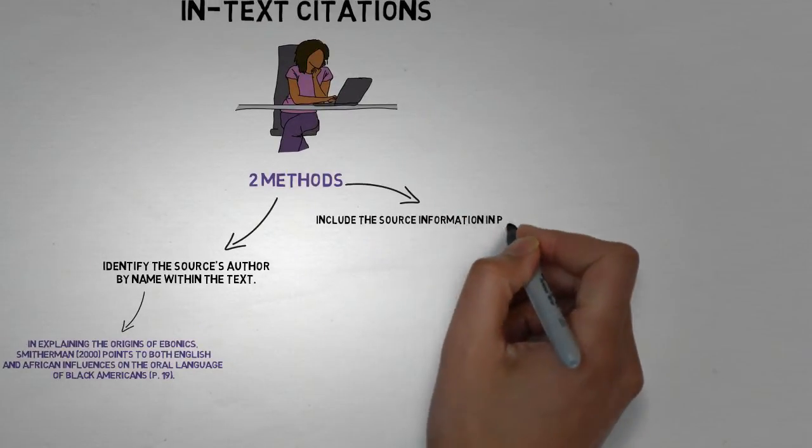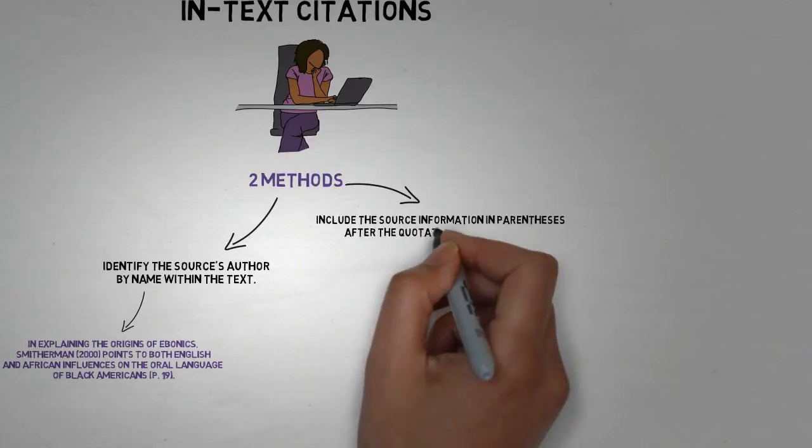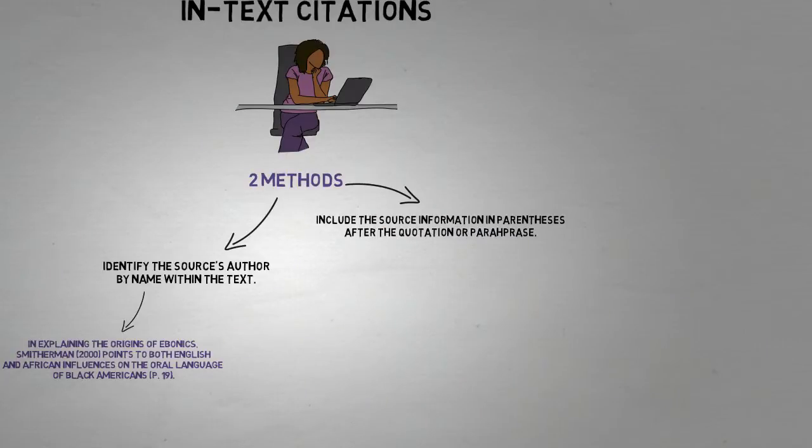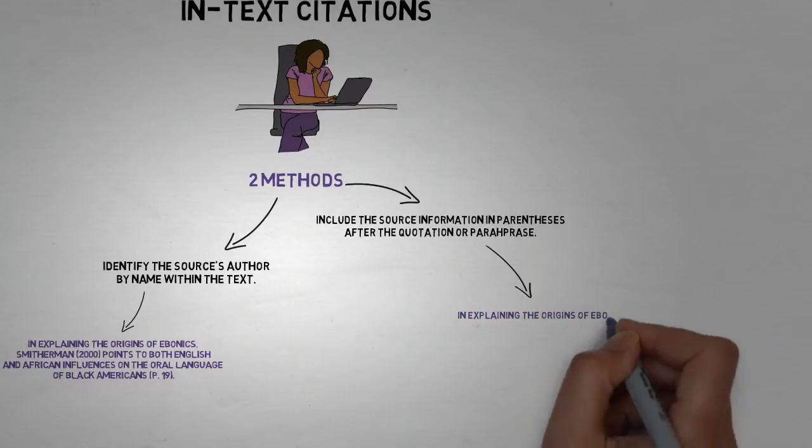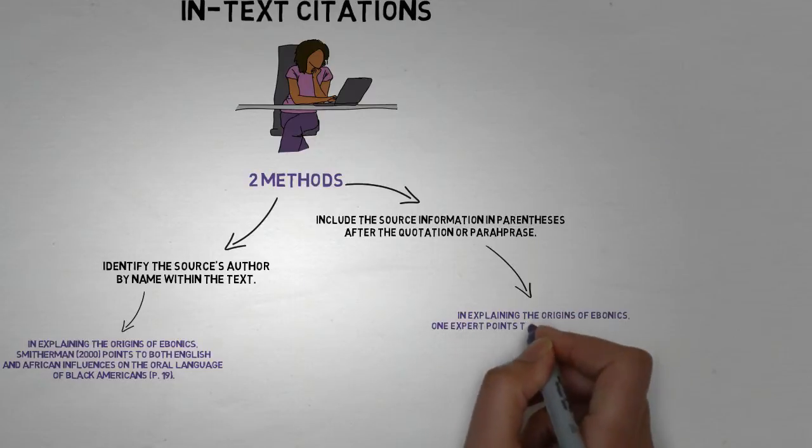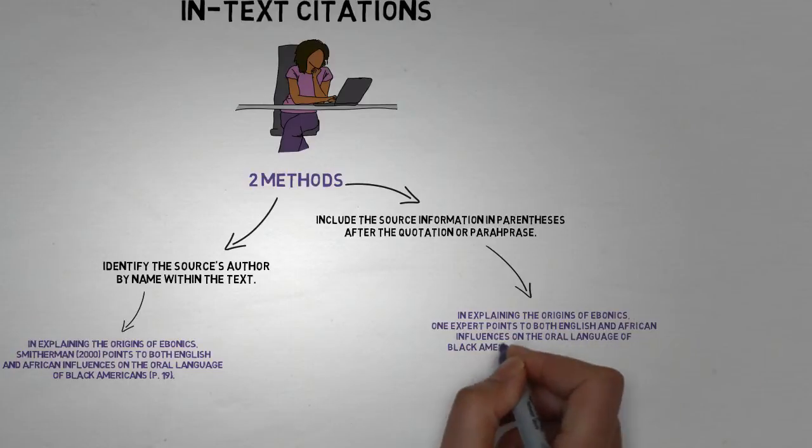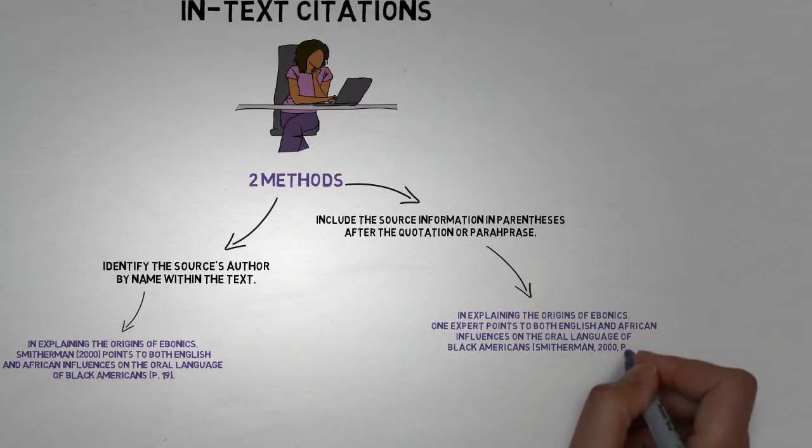The other option for citing an author's work in the body of your APA paper is to include the source information in parentheses after the quote or paraphrase. In this example, the author and publication date are not referenced within the sentence itself. Instead, that information comes after the sentence along with the page number.